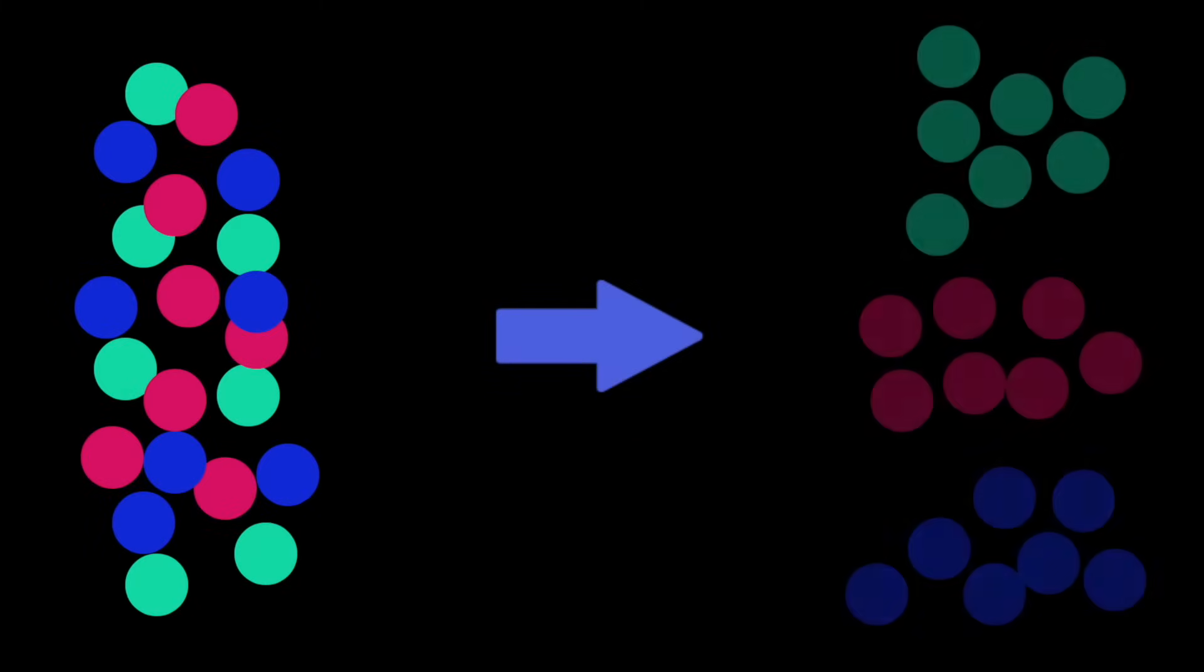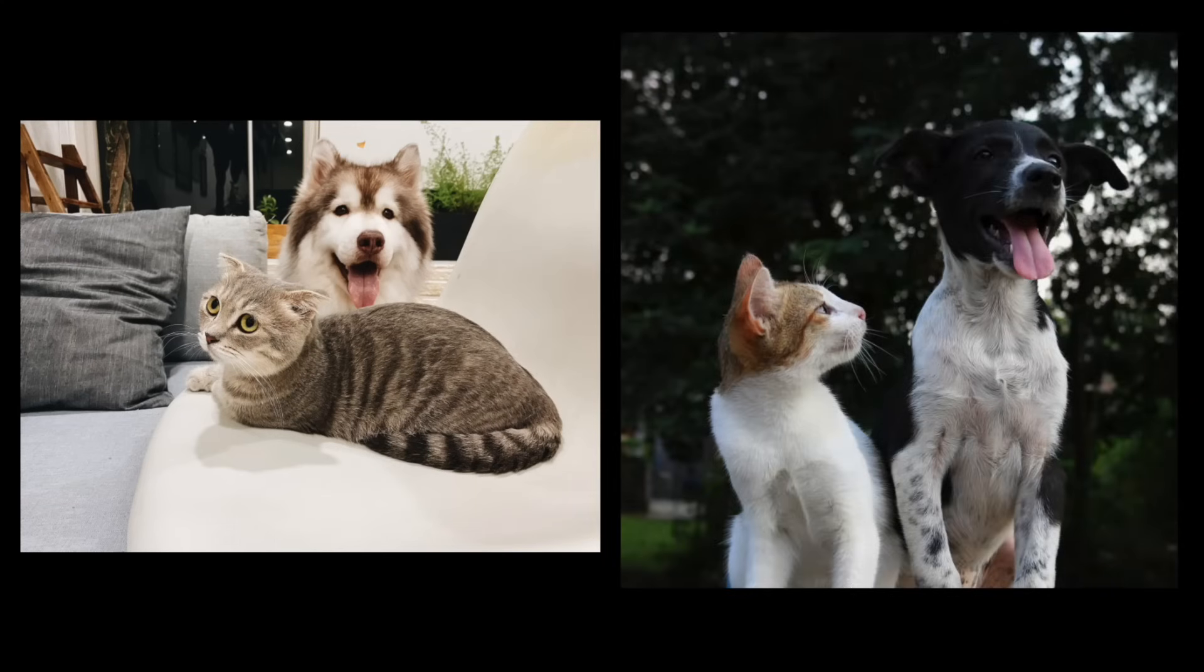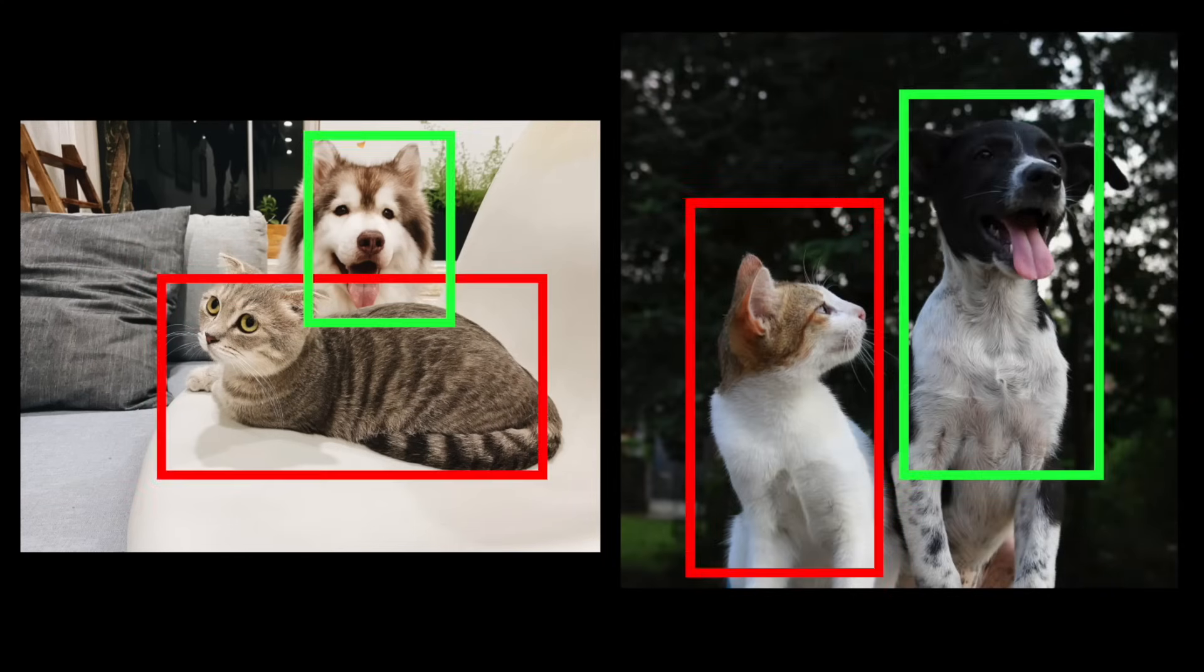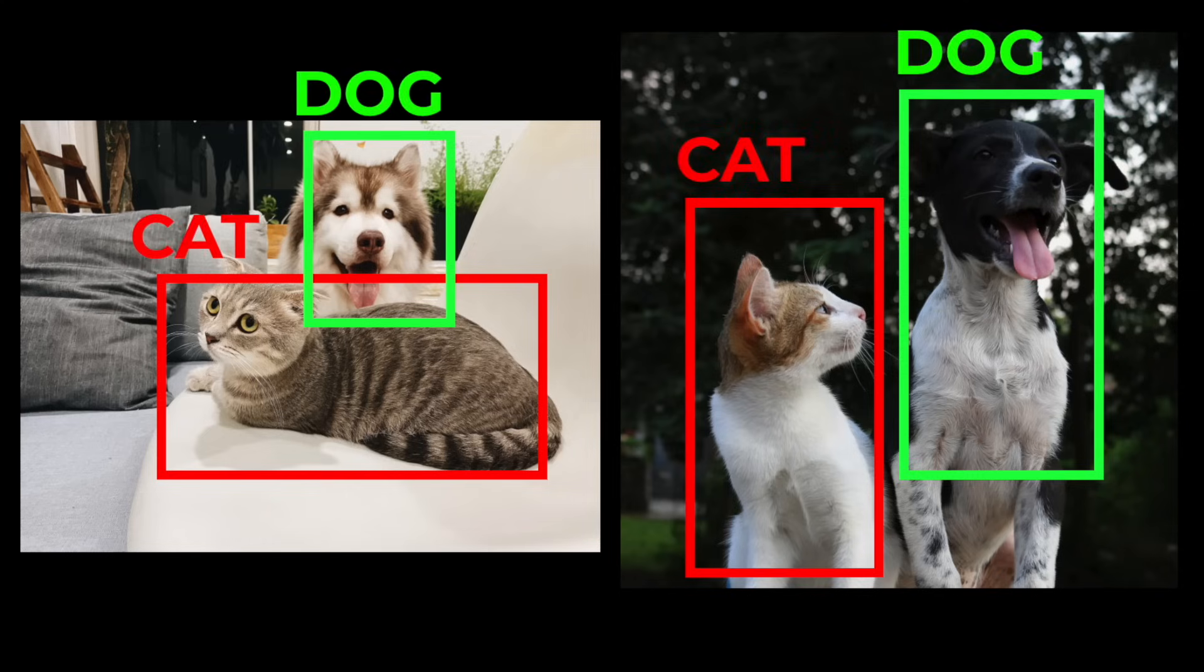But if the data isn't labeled then how is the model learning? Essentially the model is trying to figure out some kind of structure in the data and will extract the useful information from it. A popular example is object recognition, a common task in computer vision. Here the model finds similar looking objects and marks them without knowing its specific label. Each group has its own characteristics that the model learns to identify and afterwards we can very easily define the associated label for this group.